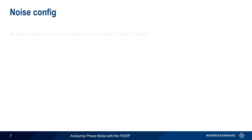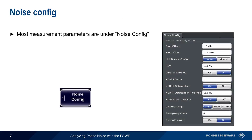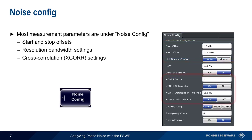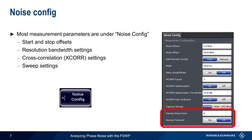Once a signal has been acquired, most phase noise measurement parameters are specified using NoiseConfig. These include configuring the start and stop frequency offsets, the resolution bandwidth, and the cross-correlation settings. Sweep settings can also be used to increase the sweep or average count, which can help smooth the trace. Sweep Forward causes the phase noise plot to be drawn from right to left, that is from smallest to largest offset.